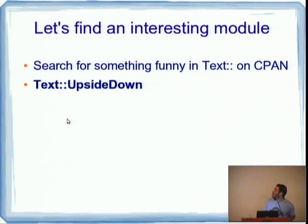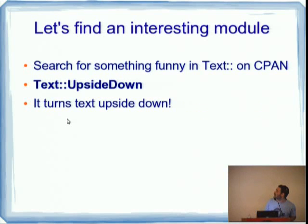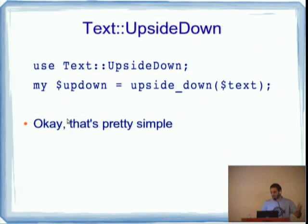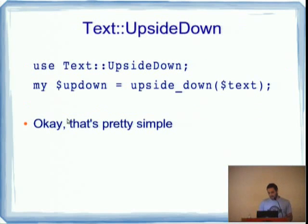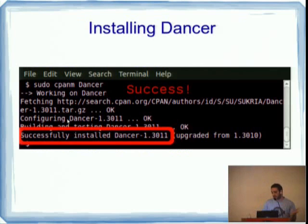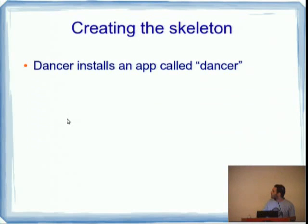So we're going to start our website. It's going to be really fast. We're going to find a module in CPAN using text. We're going to find text upside down and it turns text upside down. Basically it looks like that, upside down. Give it a text. That's pretty simple.